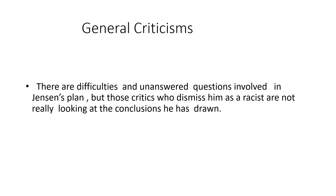To sum up Jensen's theory: intelligence is divided into two — Level 1 ability and Level 2 ability. Level 1 is associative learning, consisting of short-term memory, rote learning, and attention. Level 2 is cognitive learning, consisting of abstract thinking, symbolical thought, and use of language in problem solving. Level 1 exists in all people across all races and nations, whereas Level 2 exists more in white people than other races. He concludes that genetic factors play a greater role than environmental factors in one's intelligence.